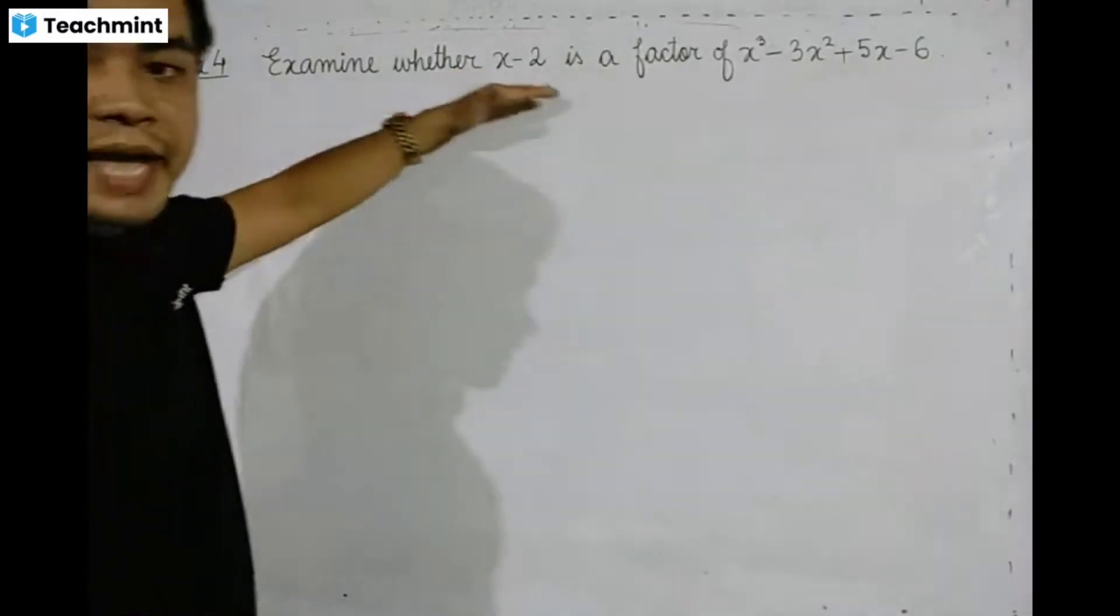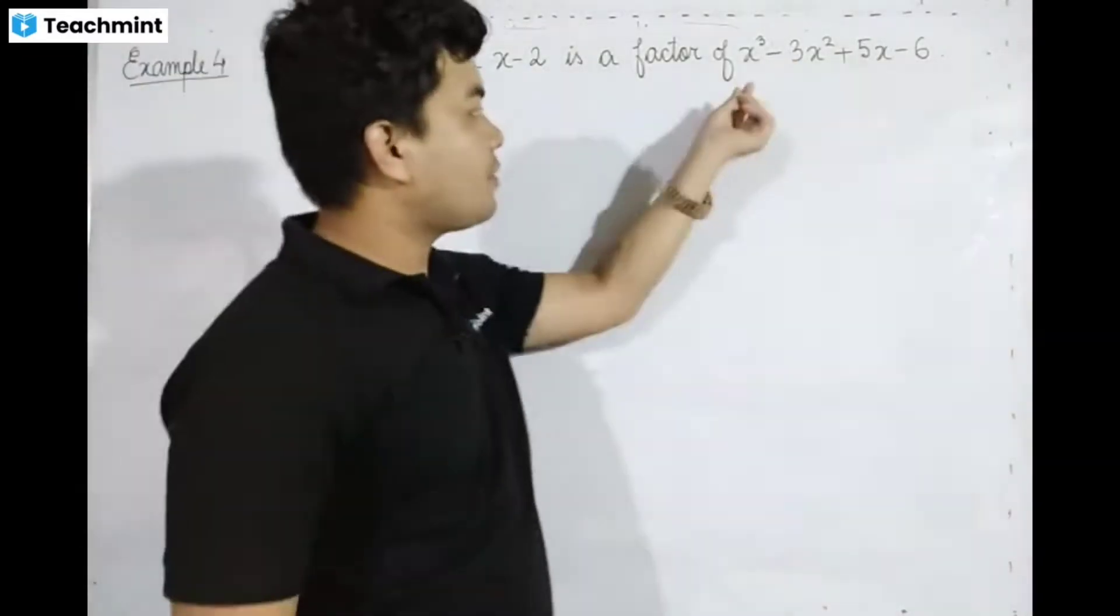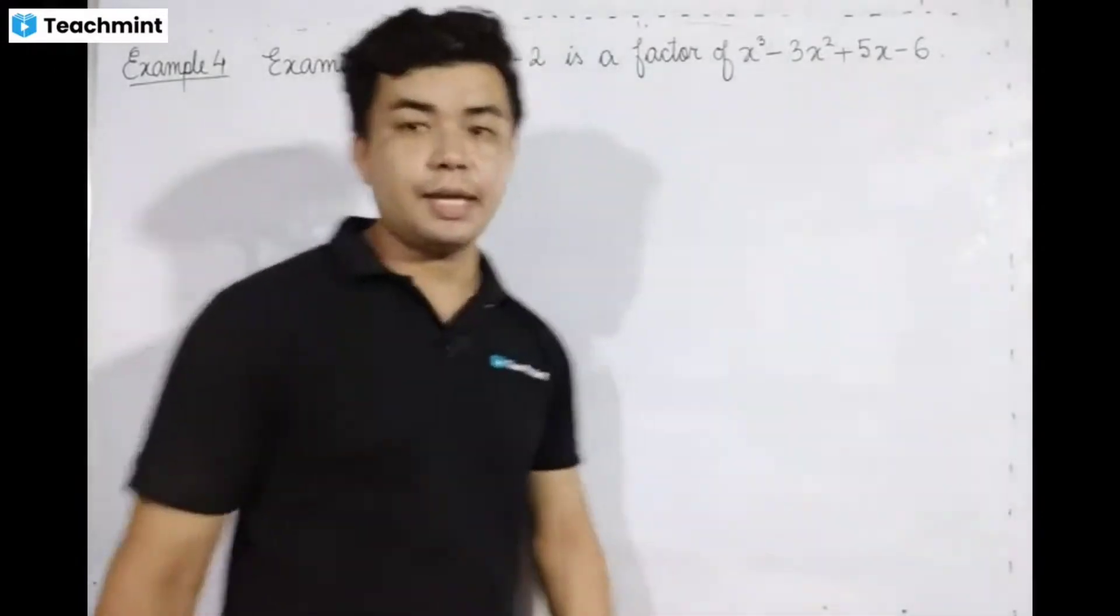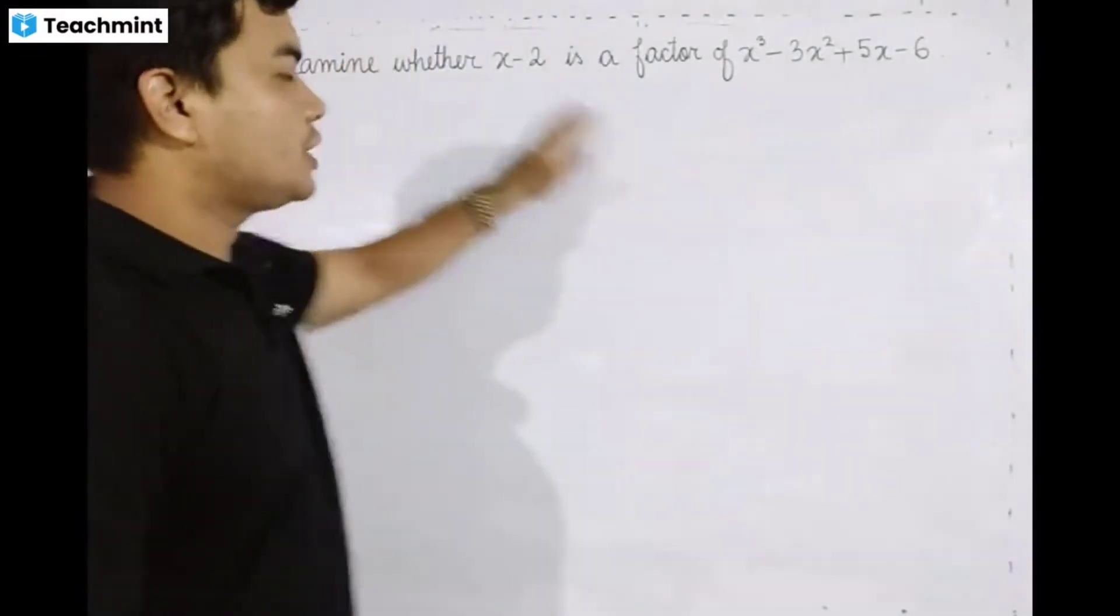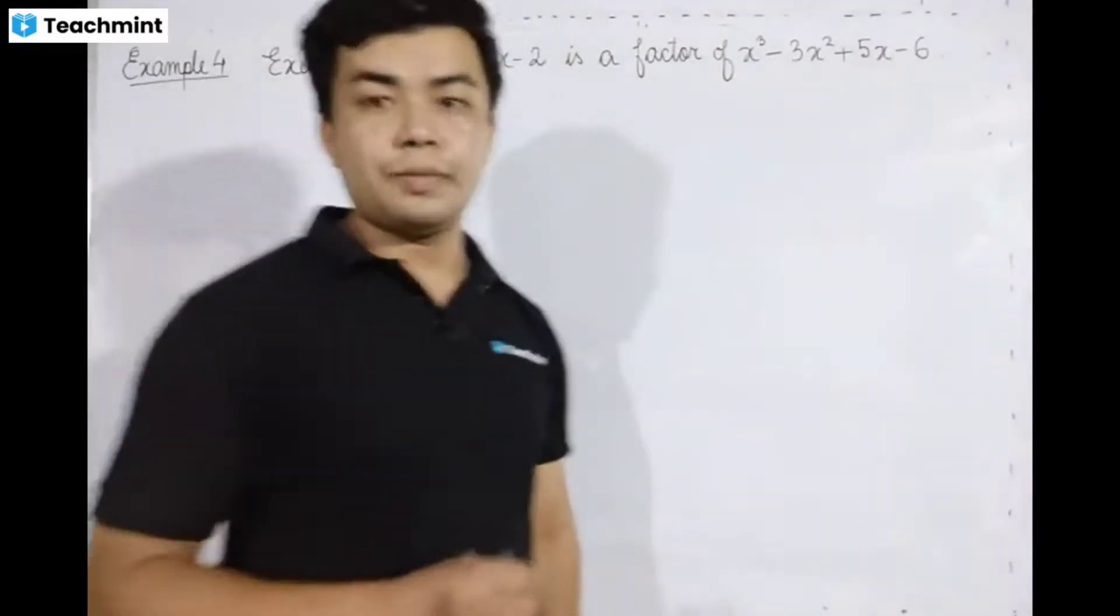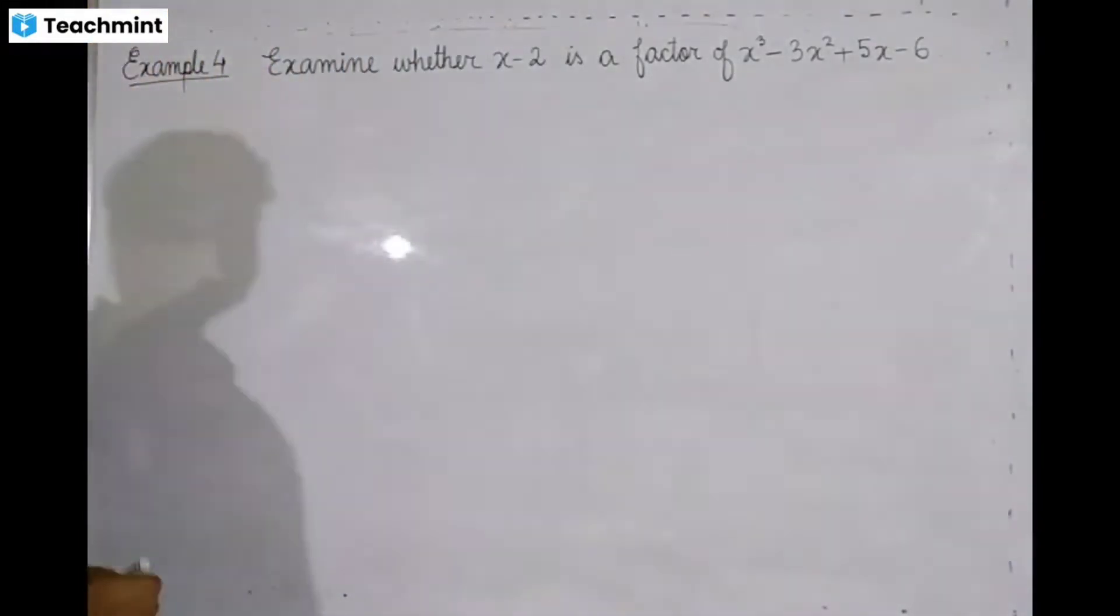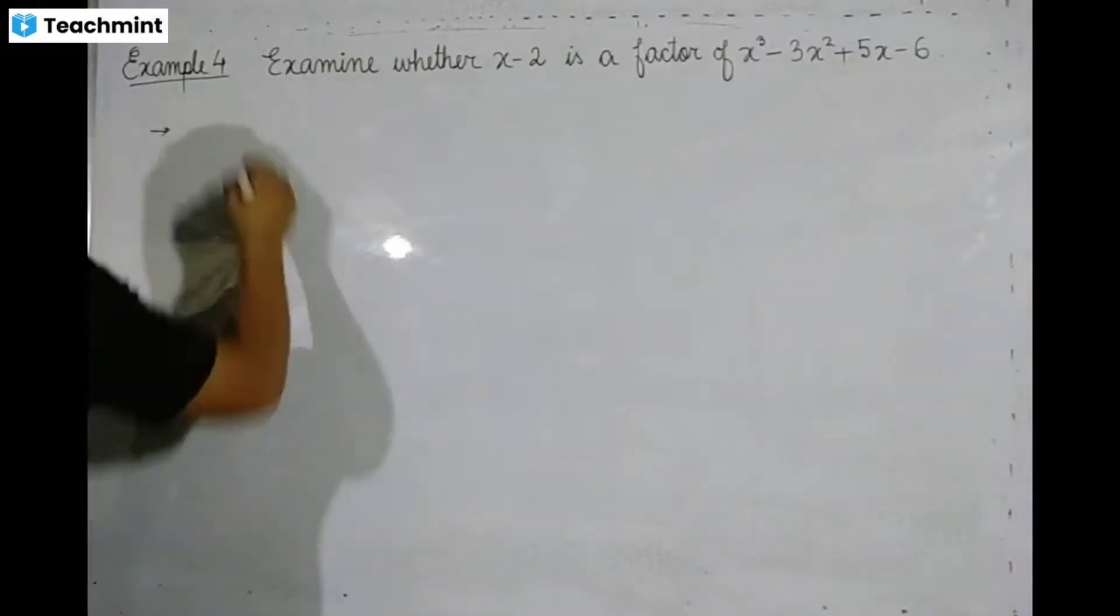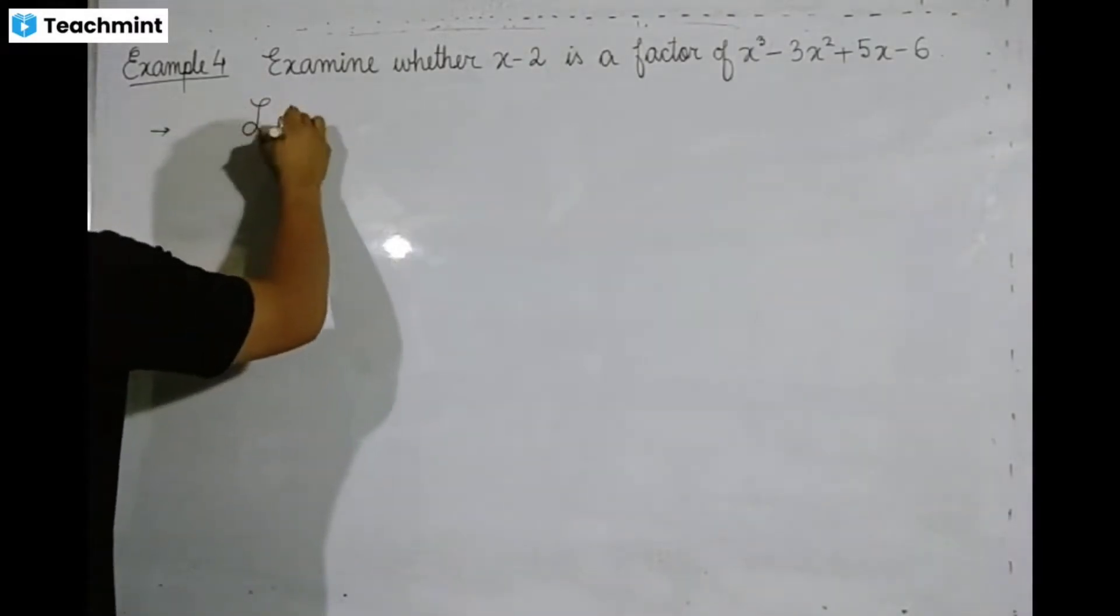Examine whether x minus 2 is a factor of x cubed minus x squared plus 5x minus 6. The first thing is that the polynomial is p of x.